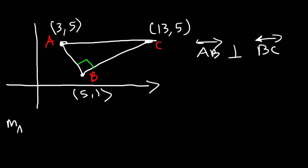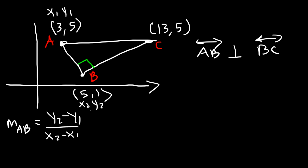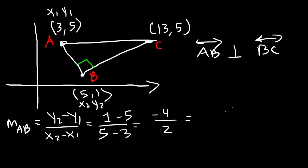Let's calculate the slope of line AB first. The formula is y2 minus y1 divided by x2 minus x1. Let's call A the point (x1, y1) and B the point (x2, y2). Y2 is 1, y1 is 5, x2 is 5, x1 is 3. So 1 minus 5 is negative 4, and 5 minus 3 is 2. Negative 4 divided by 2 is negative 2, which is the same as negative 2 over 1.